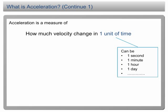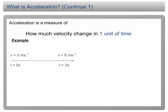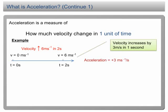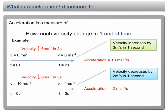Let's look at a few more examples here. The diagram shows the time and velocity of a moving object in a straight line. Initially, the velocity is 0 m per second. After 2 seconds, it becomes 6 m per second. The velocity increases by 6 m per second in 2 seconds. So, what is the velocity change in 1 second? Yes, the velocity increases by 3 m per second in 1 second. Hence, the acceleration is positive 3 m per second per second.